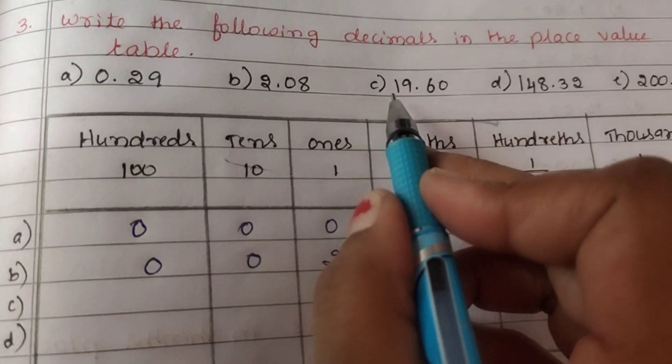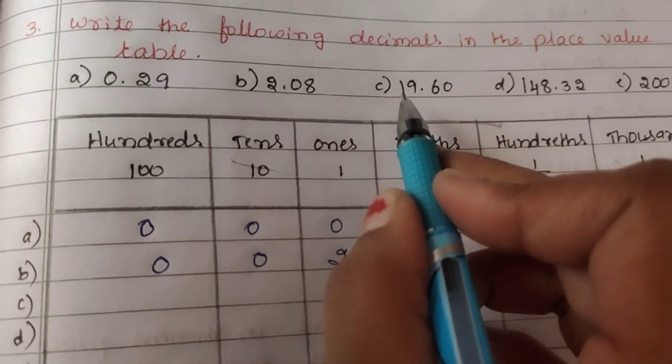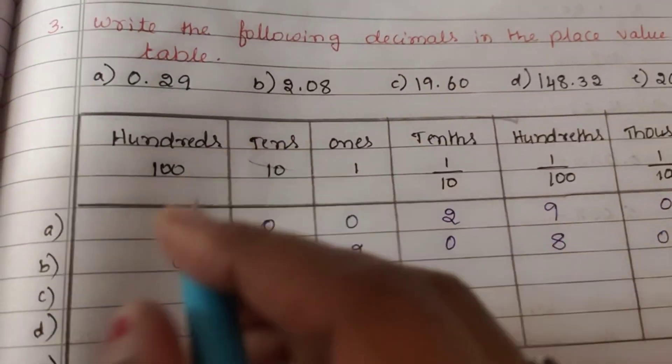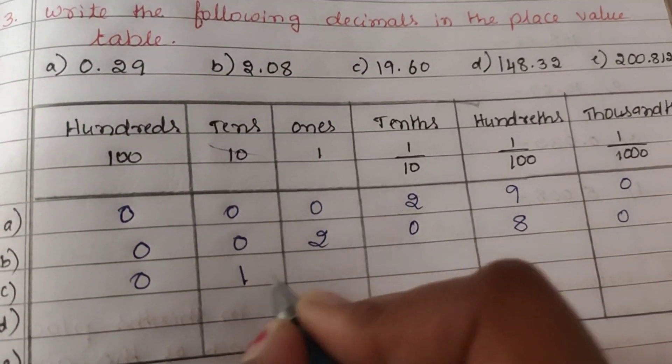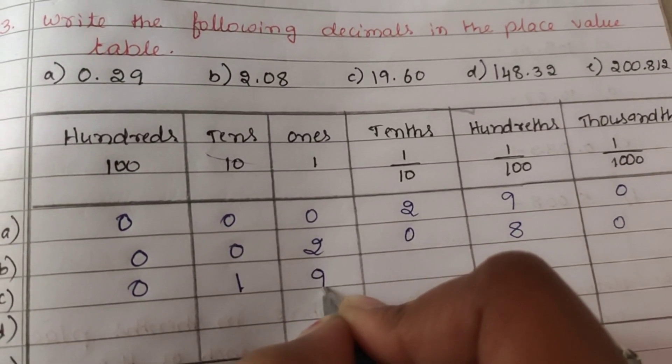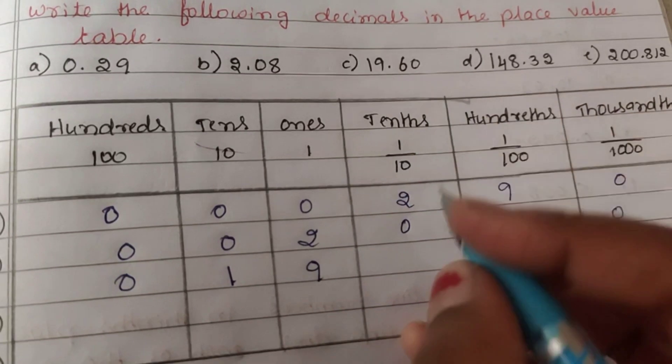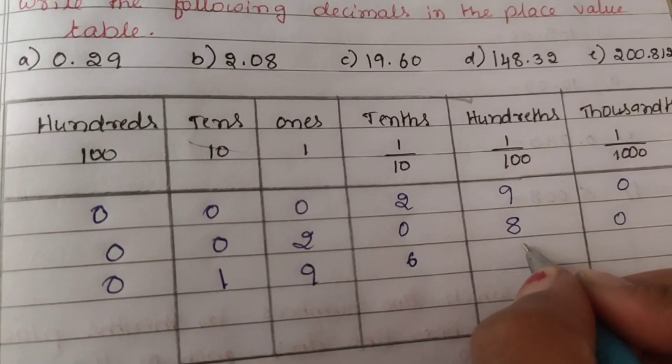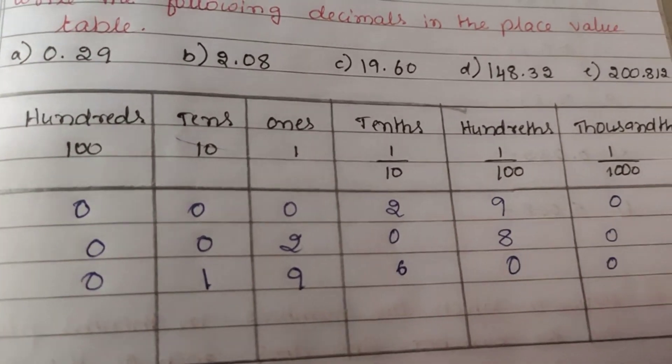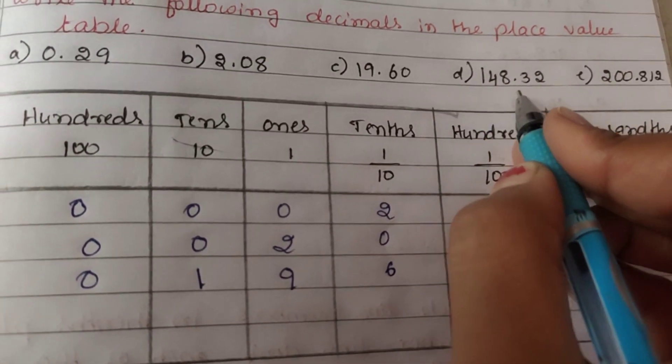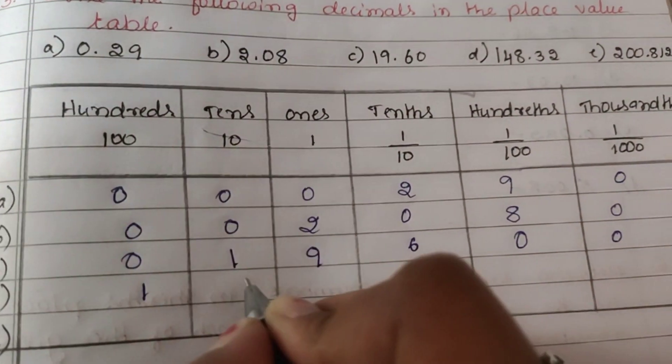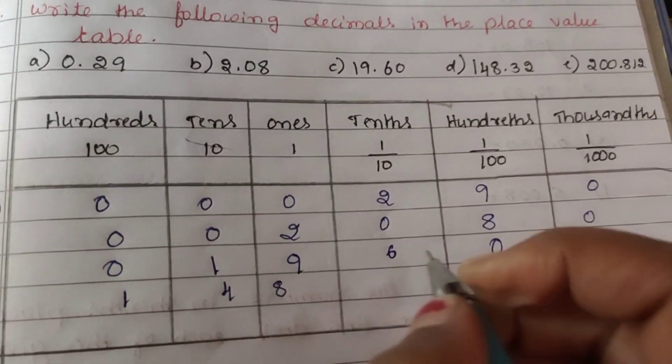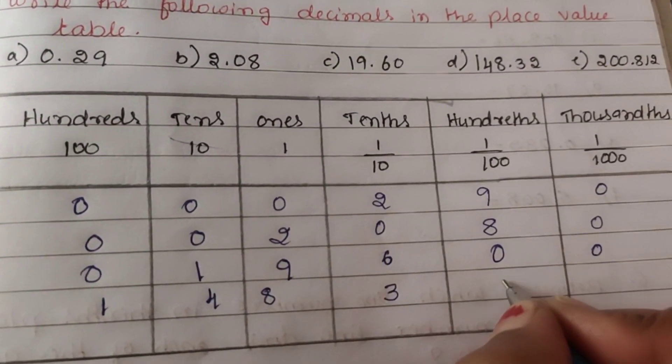Next question: ones is 2, tenths is 8, so 0, 0, 2, 8, 0. For 19.60: 100s are 0, 10s are 1, ones are 9, tenths are 6, hundredths are 0, thousandths are 0. For 148: hundreds are 1, tens are 4, ones are 8, tenths are 3.